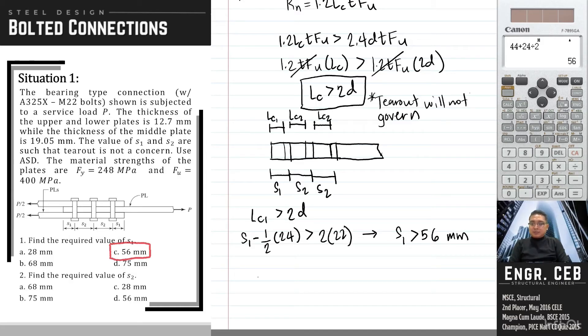Next, we repeat the process for Lc2. Express Lc2 in terms of S2. So we will subtract half of each bolt from each side. So that is equivalent to subtracting one complete bolt hole. So this will be 24. And then this should be greater than 2 times 22. So therefore, S2 is equal to 68mm. Therefore, the answer is letter A.